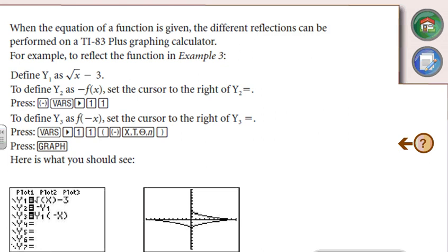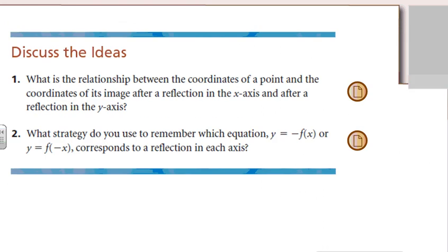Here's a way to use your graphing calculator to help you out. Follow these steps: put y1 equals your equation, then y2 equals negative y1 — which is a reflection about the x-axis — and then put in a negative x, which is a reflection about the y-axis. Then you can see what the graphs look like. Try that out for yourself, because using your graphing calculator is going to be extremely important on your diploma exam. Good luck, and we will discuss any issues with reflections in class.